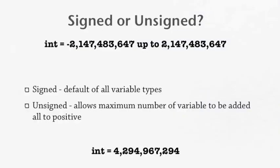Now, signed or unsigned. An integer, most of those, they did have extreme limits of how much the numbers that they can handle. So for an integer, it's 2,147,483,647 positive and negative. So by default, all variable types are signed. So you don't have to say signed int. You can just put int, and it automatically says it's signed.